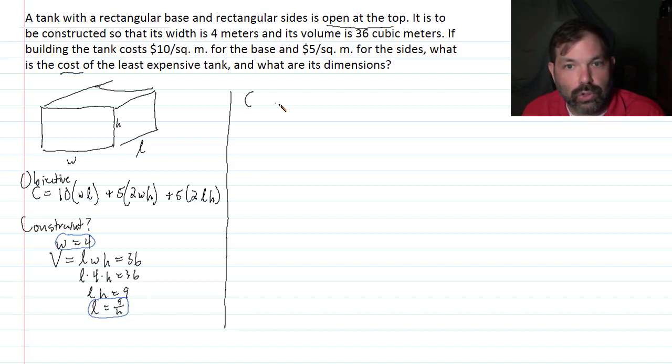So let's do that. Take my objective function C, the cost. And so that would be 10 times W, which is 4, times L, which is 9 over H, plus 5 times 2 is 10 times W, which is 4, times H, which is H, plus 5 times 2 is 10 again, times L, which is 9 over H, times H.